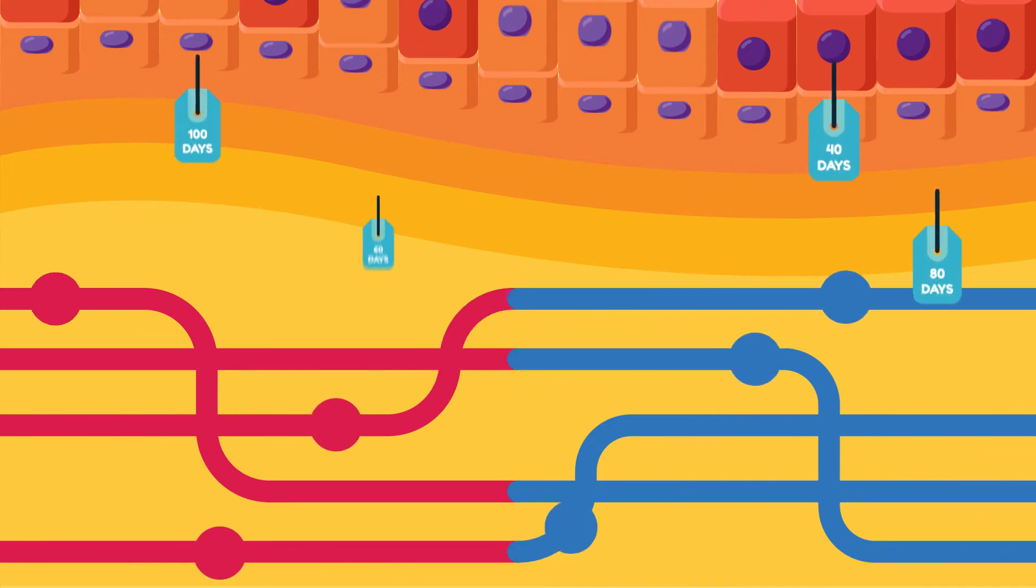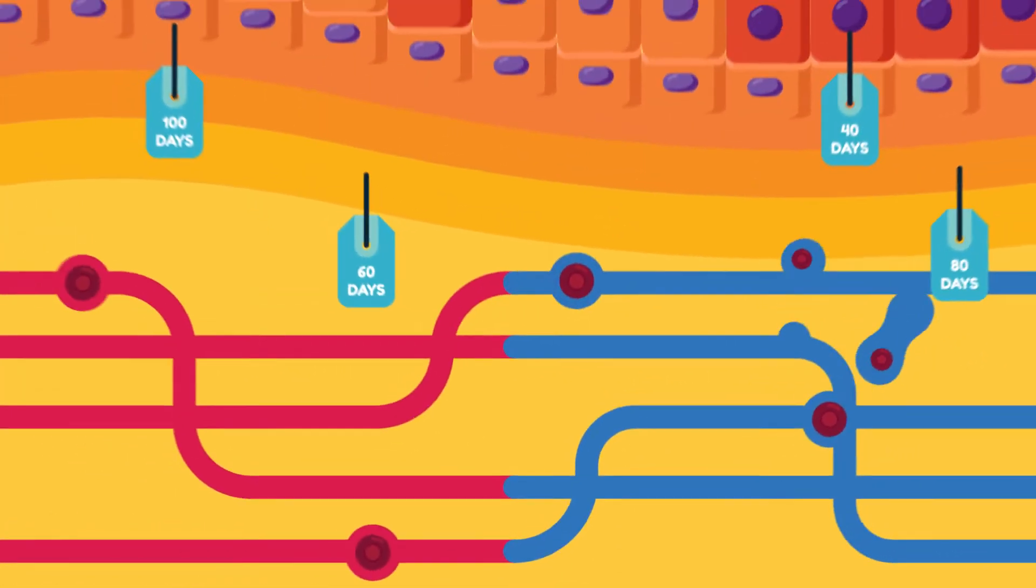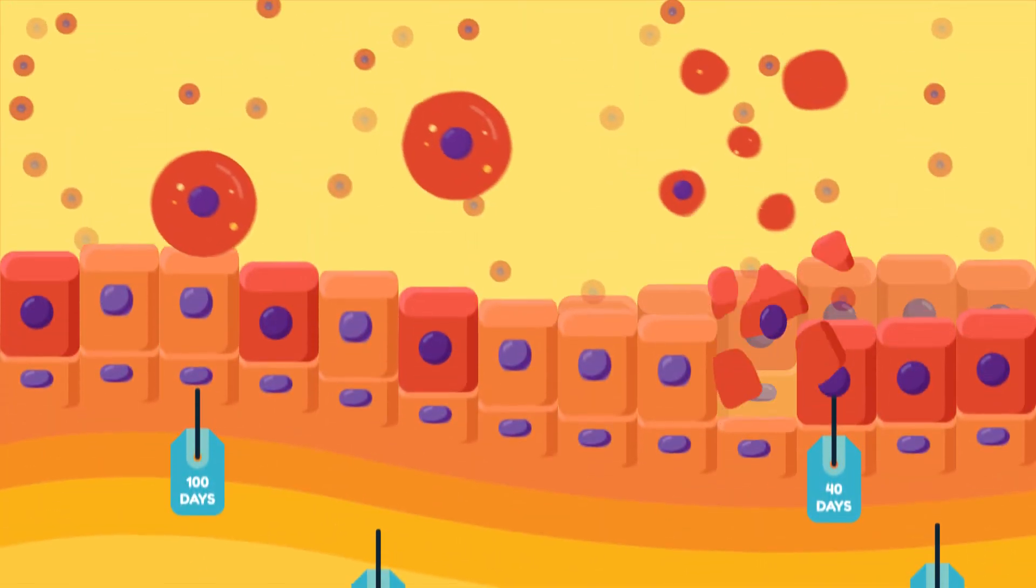Most cells in the body have a shelf life. For example, red blood cells live for 120 days. At the end, they are destroyed in the body. This is a method of apoptosis.